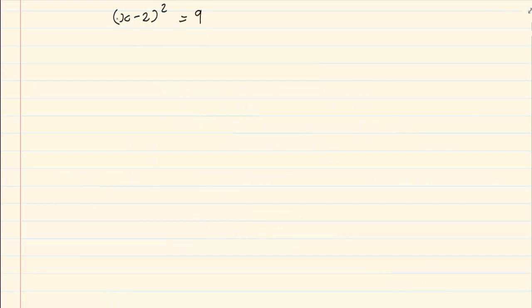Previously we learned that if we have a square, we must make everything equal to zero, giving us (x-2)² - 9 = 0. This is a perfect difference of two squares.